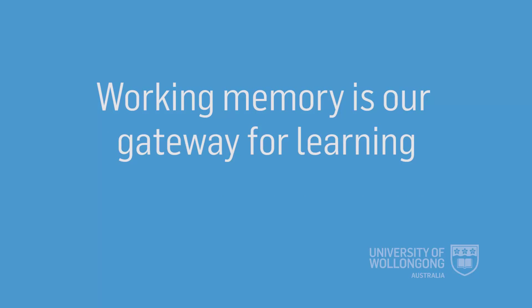Working memory is our gateway for learning, so what we do with information in working memory is important — the amount of time we process information and how we process it. But we can't see our working memory, which means we can't see when stuff is spilling out, when we're becoming cognitively overloaded.